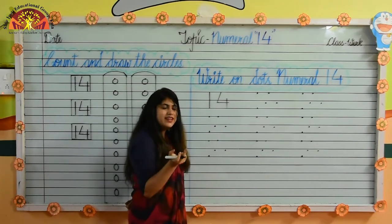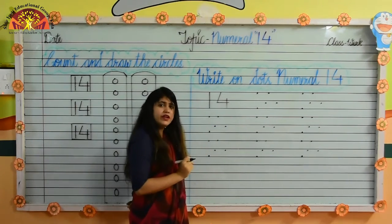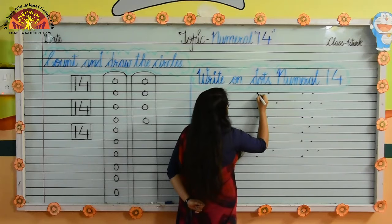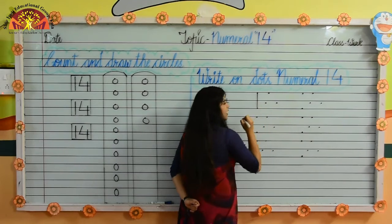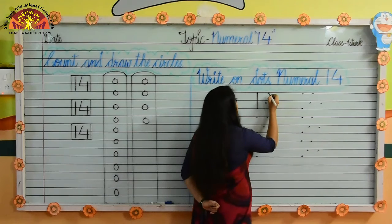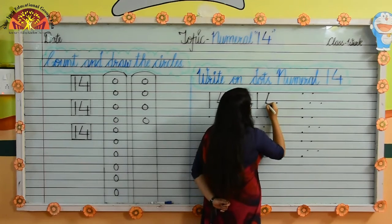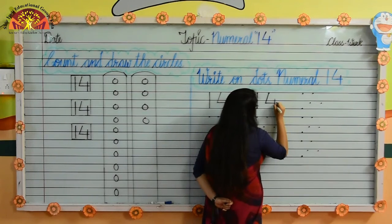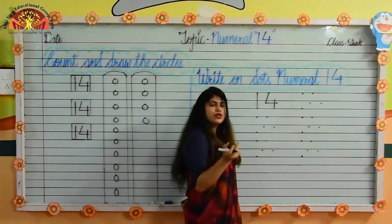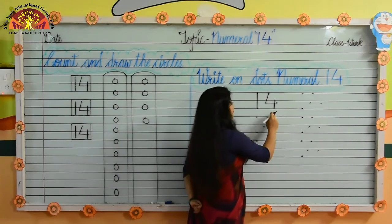Tell me kids, which numeral is this? 14. Now do with me. Put your crayon here, make standing line, like this. Put your crayon here on the first dot, make standing line, like this. Stop here, then make sleeping line, now make standing line. Tell me kids, which numeral is this? 14.